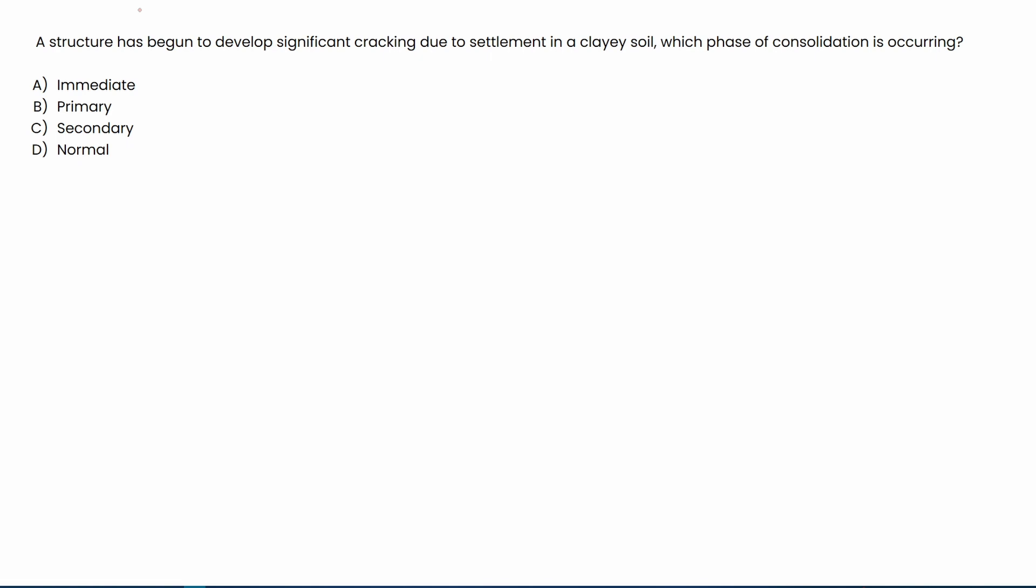It gives us our four options, immediate, primary, secondary, and normal. And so the first thing that we need to do is find some reading material. And granted, this doesn't have a lot of information applicable to this problem, but it does have some good information that might help with the background of the problem.